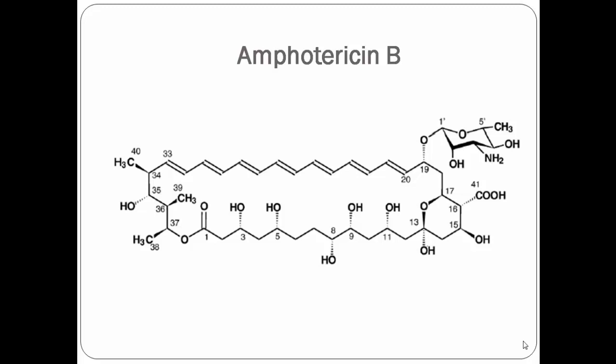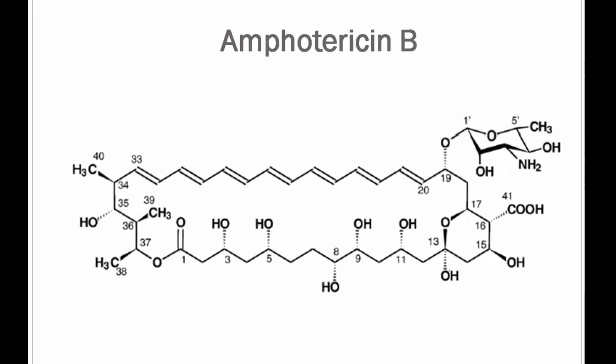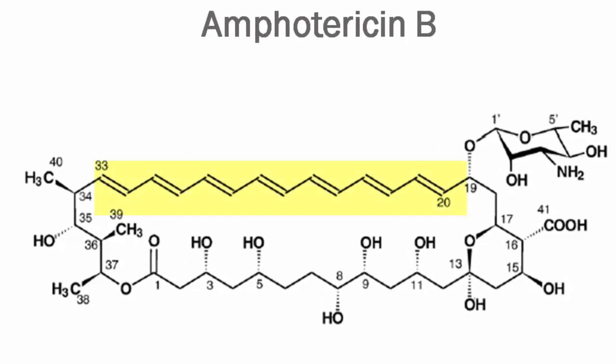From the medicinal chemistry point of view, Amphotericin B is a polyene antibiotic. Polyene means it has many double bonds. If you can see in this picture, there are so many double bonds, and that is why it is called a polyene antibiotic.